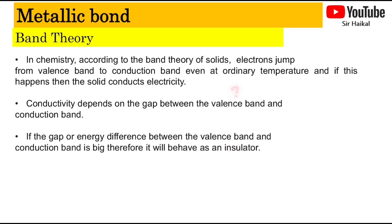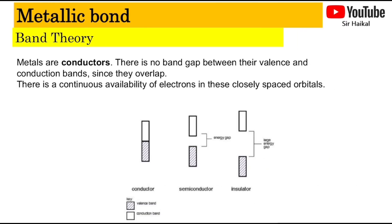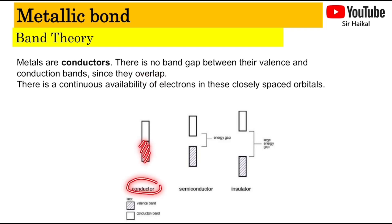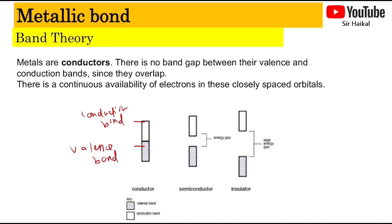So what is the valence band and what is the conduction band? Valence band and conduction band can be understood by looking at the diagram here. Metals are conductors — they conduct electricity. For metal, there is no band gap between the valence and the conduction band; therefore they overlap. The valence band is the shaded region filled with electrons, while the empty orbital is known as the conduction band. For metal, there is no band gap — it's simply overlapping, or if there is a gap, it's only a very small amount.